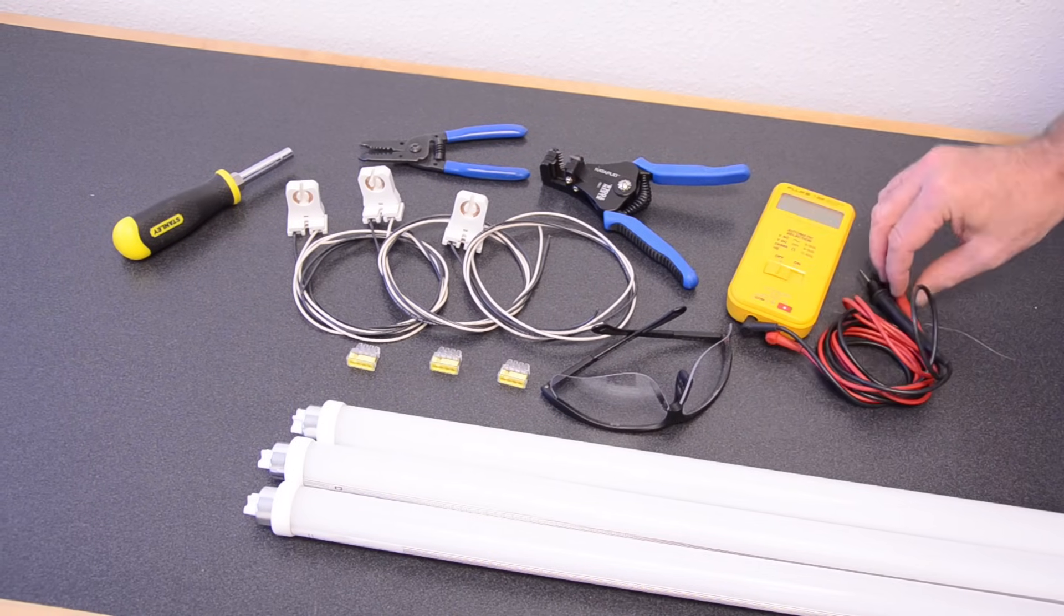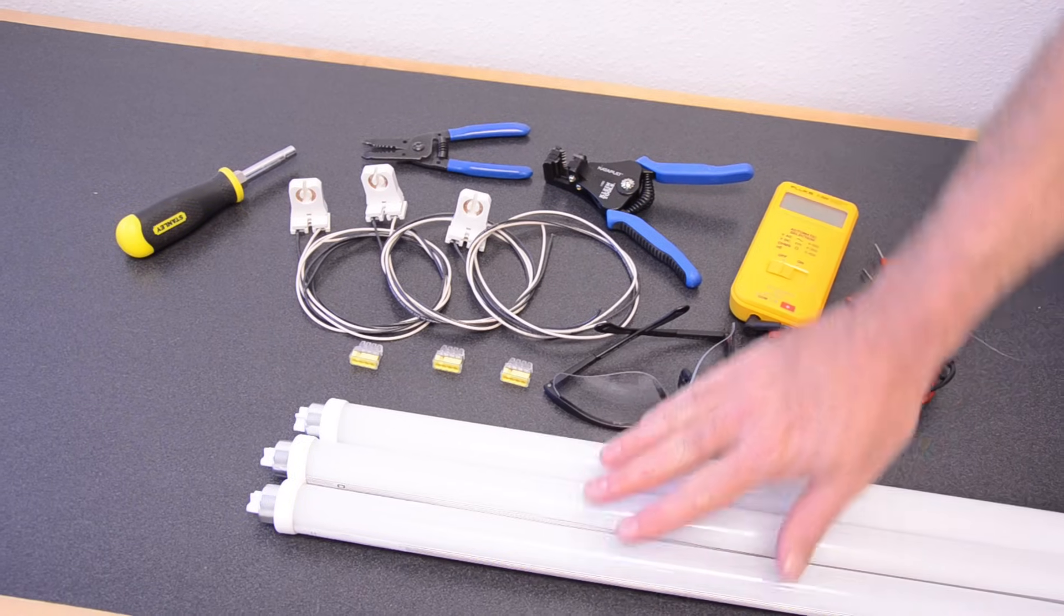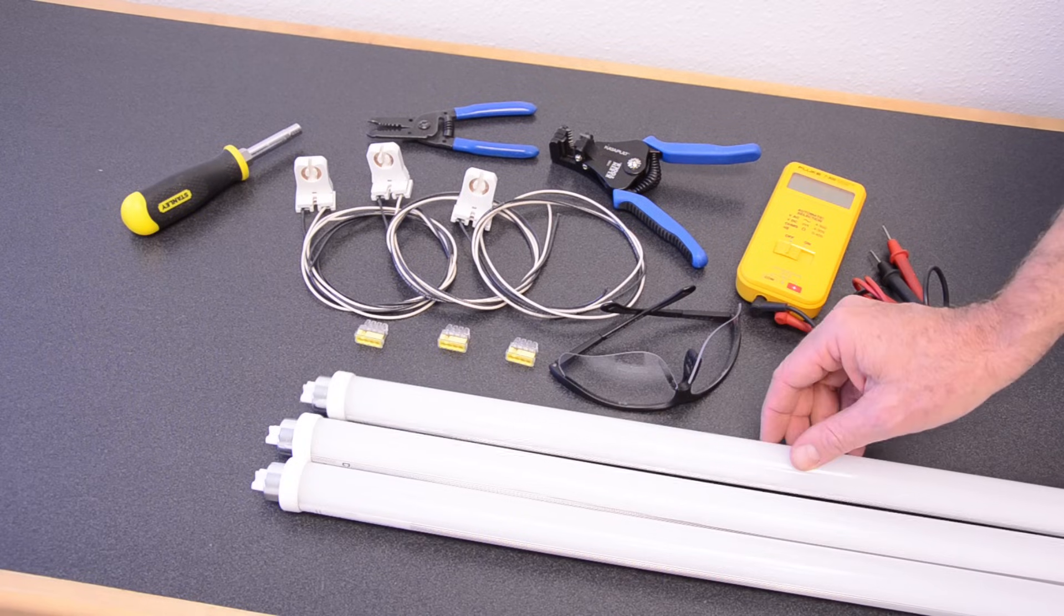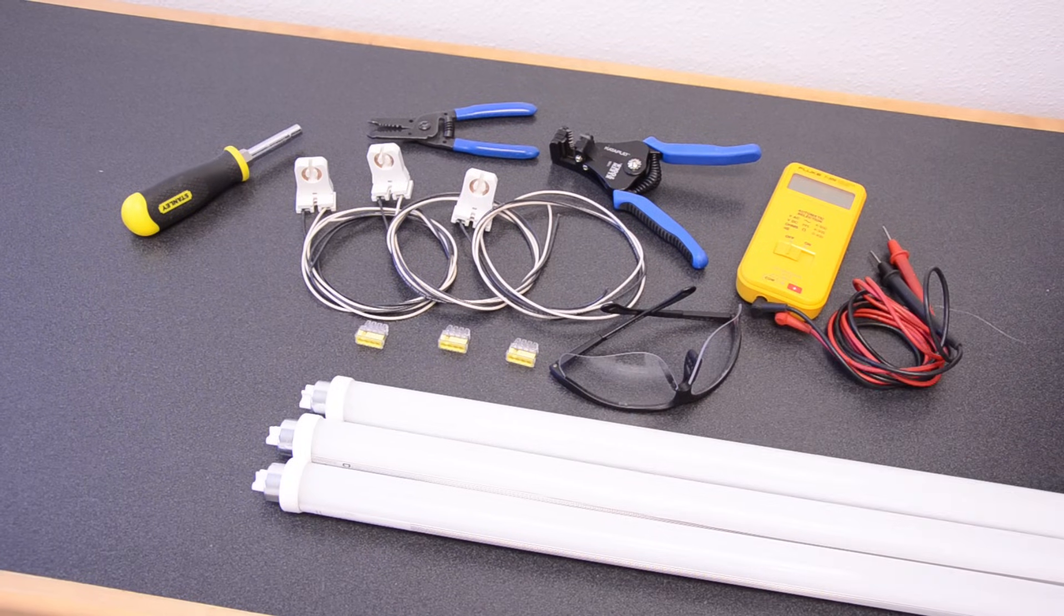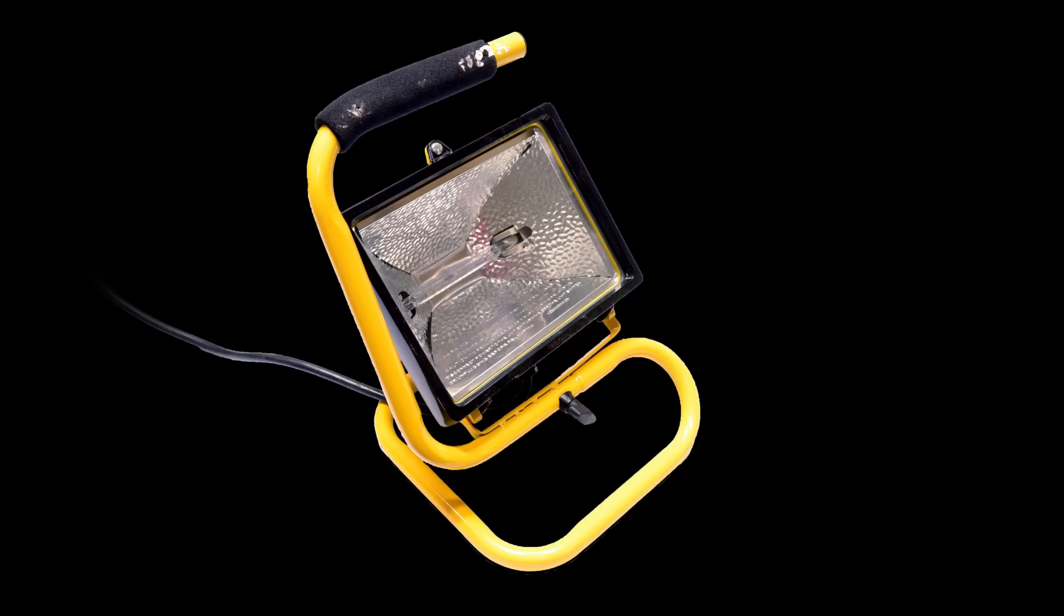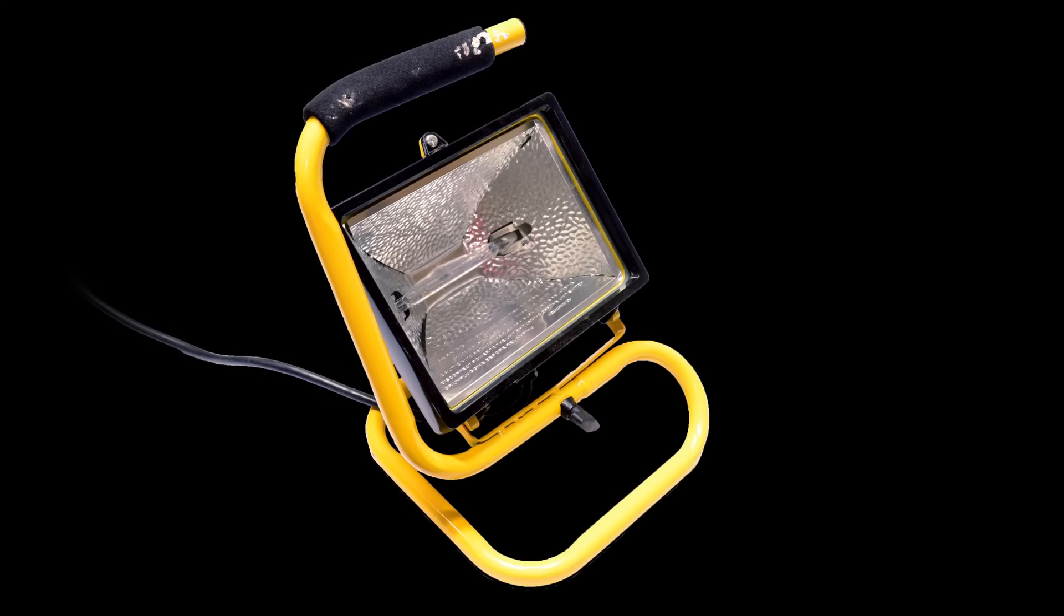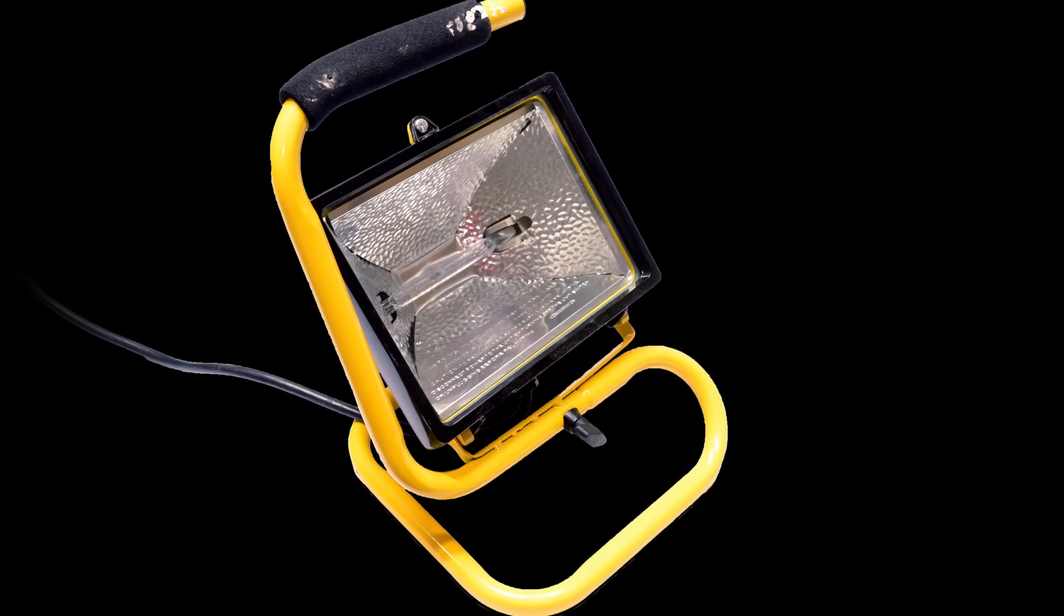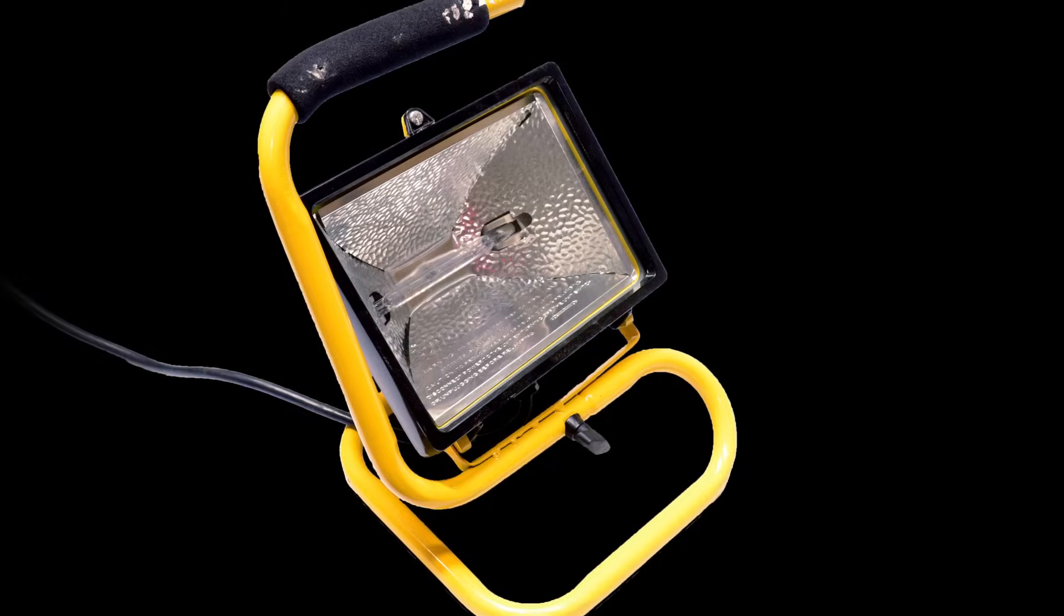Of course the safety glasses. And we always like to have a meter with us to check the power. And of course the new energy efficient UL approved T8 LED four foot tubes. We also carry a work light with us. As you just shut off the lighting in the circuit breaker panel it'll be too dark to work. Save yourself a trip and bring a good work light with you on the job.